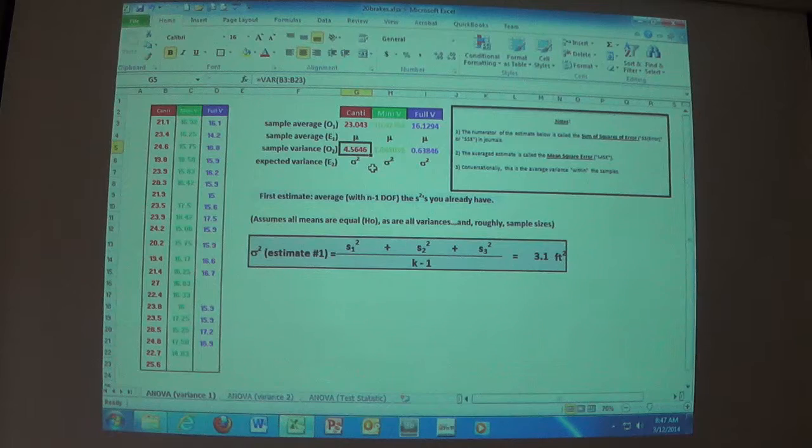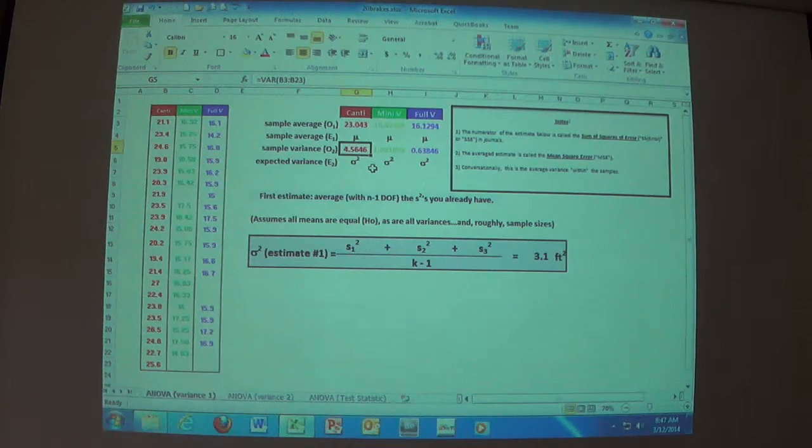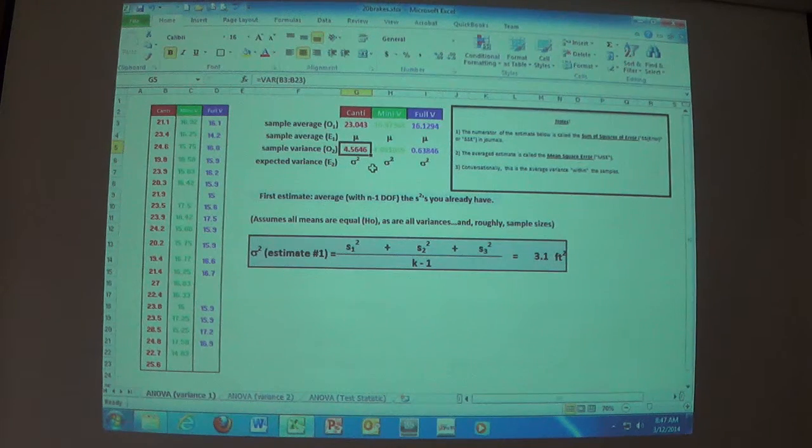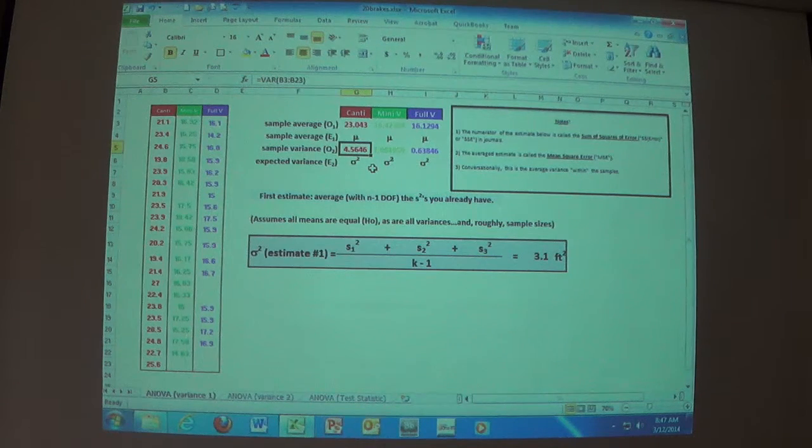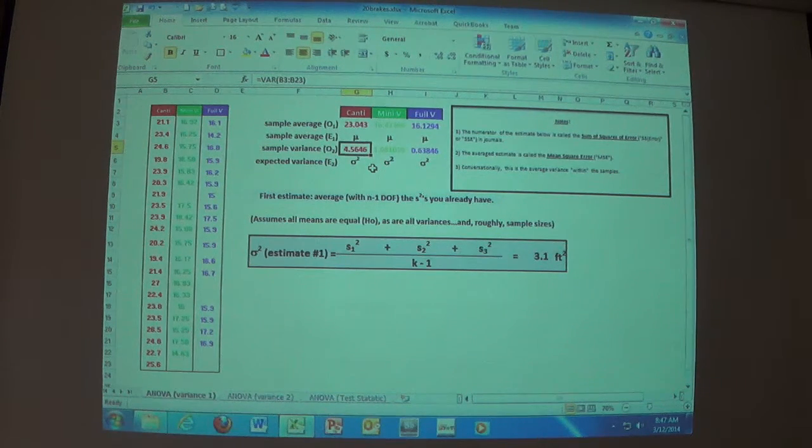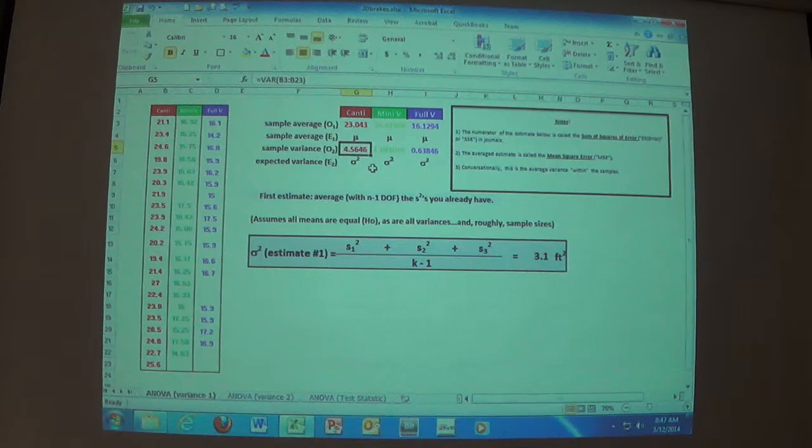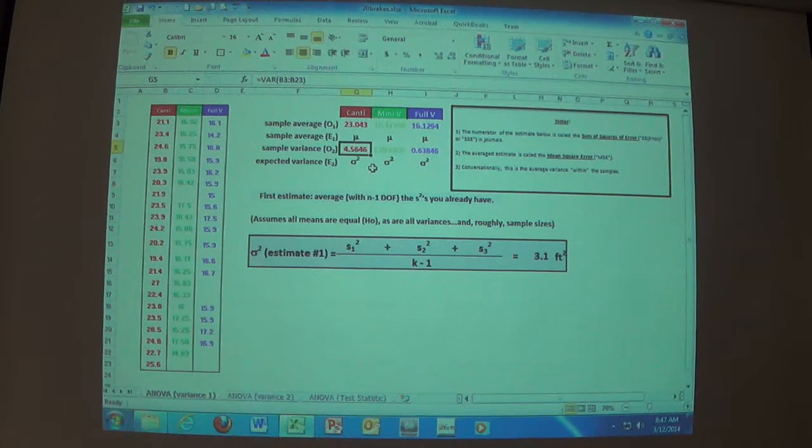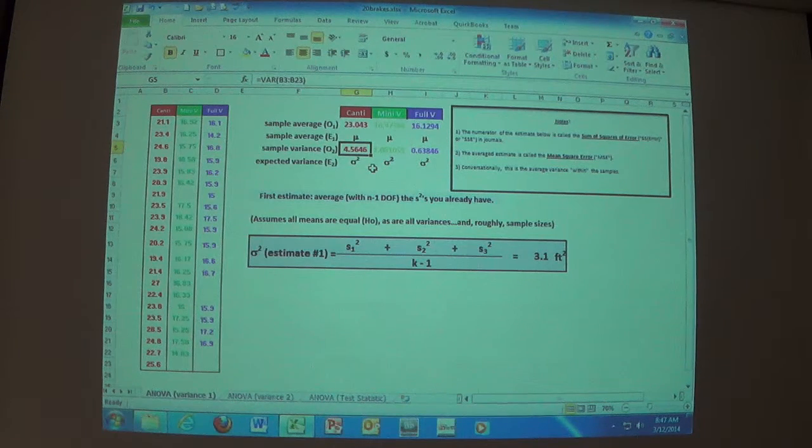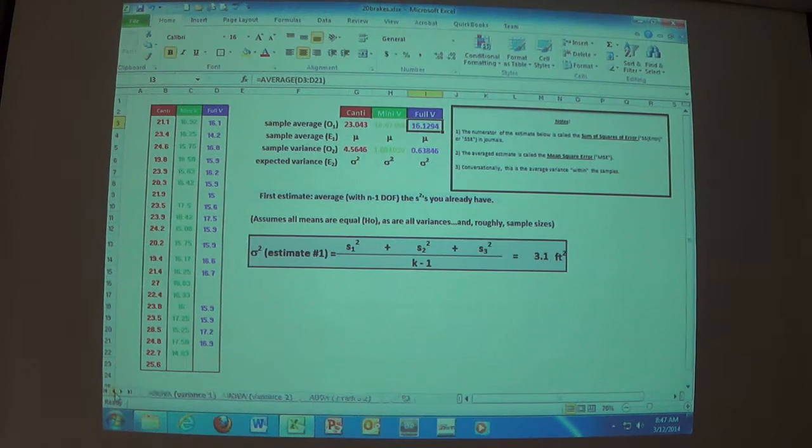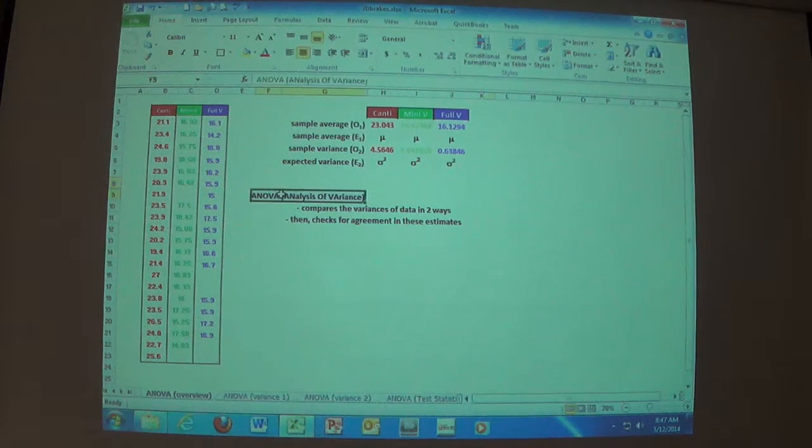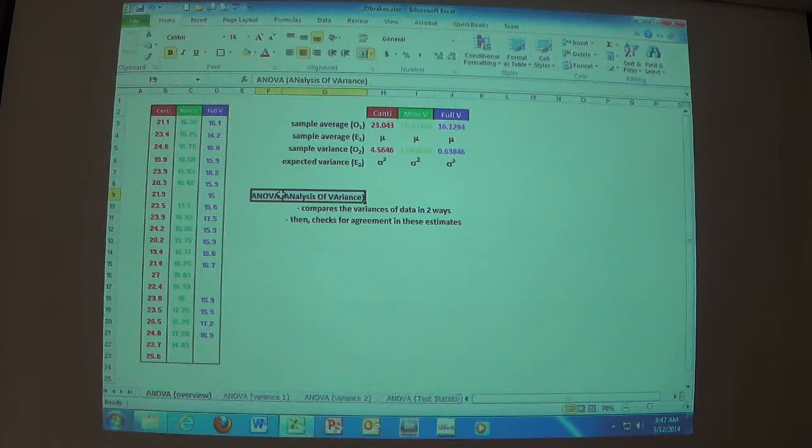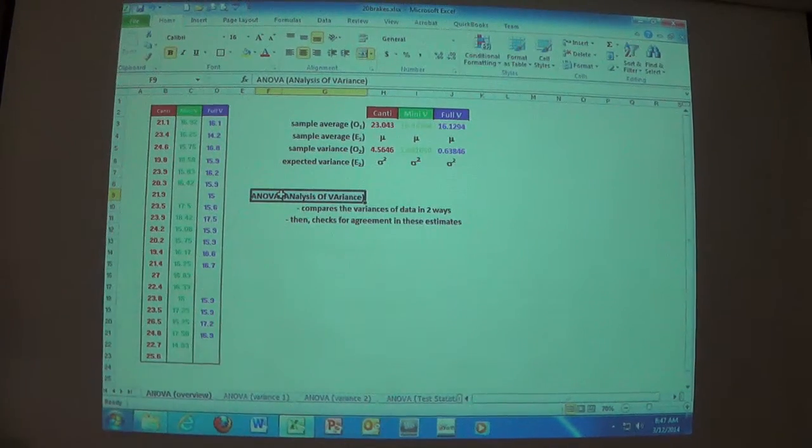We now have sample variances, and we have sample averages. And we have expected averages, and expected variance. I'm calling them sigma squared. The important stuff is going to be in dark. The important stuff is going to be dark. Don't worry about that. This is just the data. The data is pulled over here. Everything that's going to be important is going to be in black font.